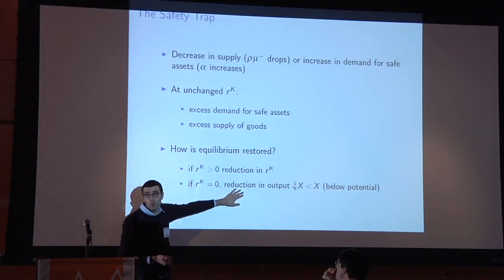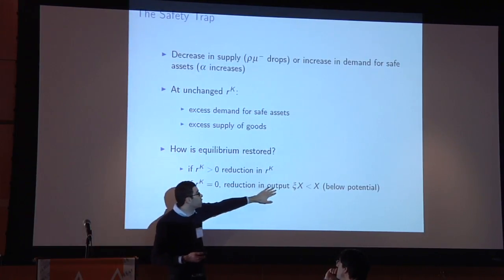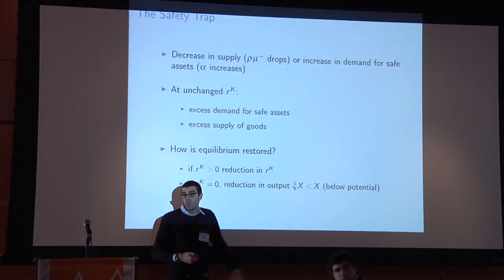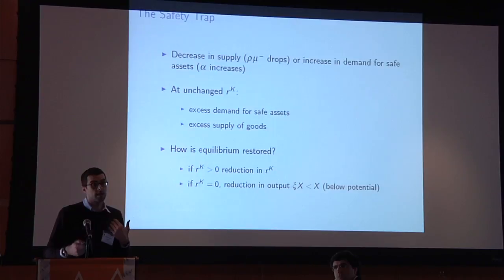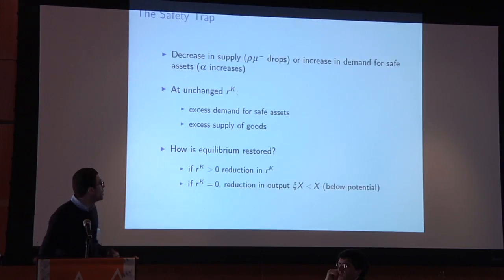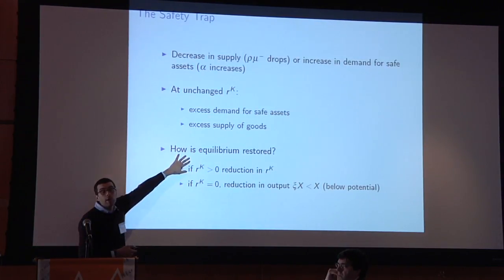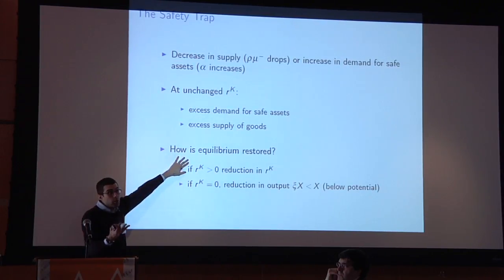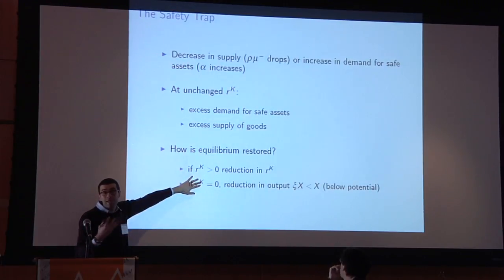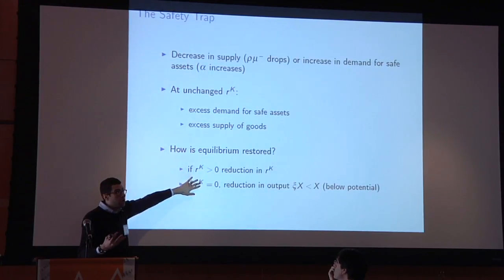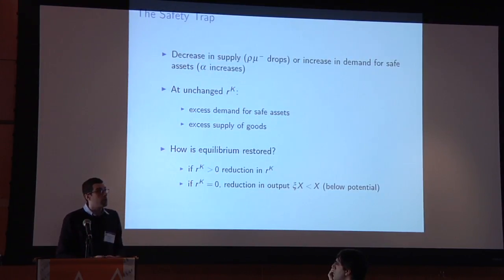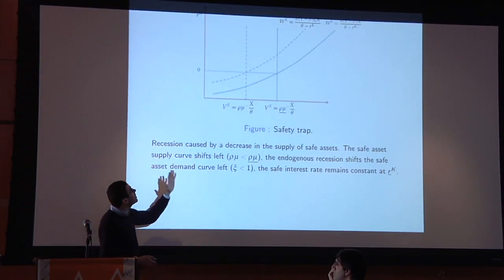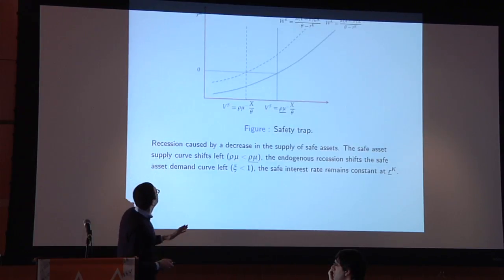What I show is that in this model, equilibrium is restored by a contraction in output. The recession decreases the demand for safe assets and restores equilibrium. Think of it as a virtuous equilibrating mechanism — the decline in interest rate — that only works when rates are positive. That virtuous mechanism breaks down at zero and is replaced by a perverse mechanism where equilibration comes from a reduction in output.